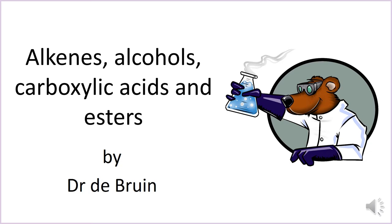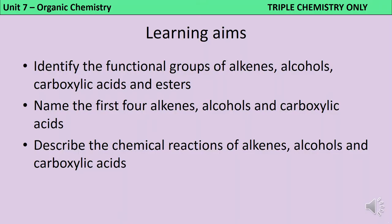This is a revision video for GCSE Chemistry, looking at the four homologous series that are covered in triple science but not in combined science. By the end of this video, you should be able to identify the functional groups of all four of these homologous series, name the first four alkenes, alcohols and carboxylic acids, and also describe the chemical reactions of these groups.